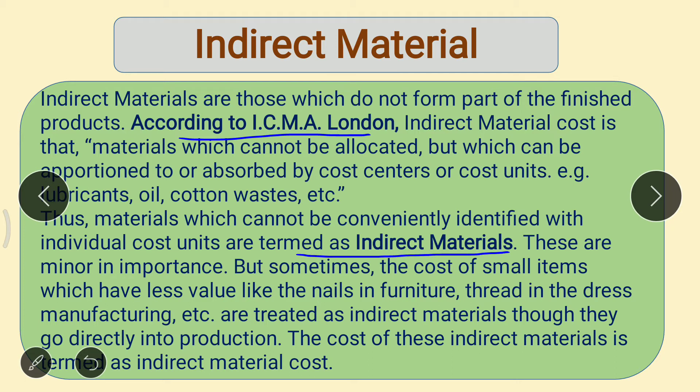These are minor in importance, but sometimes the cost of small items which have less value — like nails in furniture, thread in dress manufacturing, etc. — are treated as indirect materials though they go directly into production. The cost of these indirect materials is termed as indirect material cost.